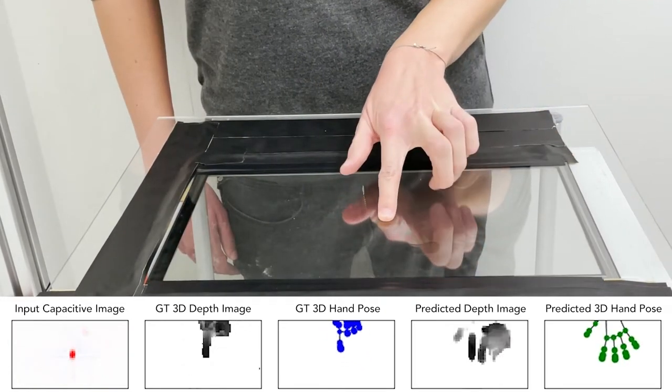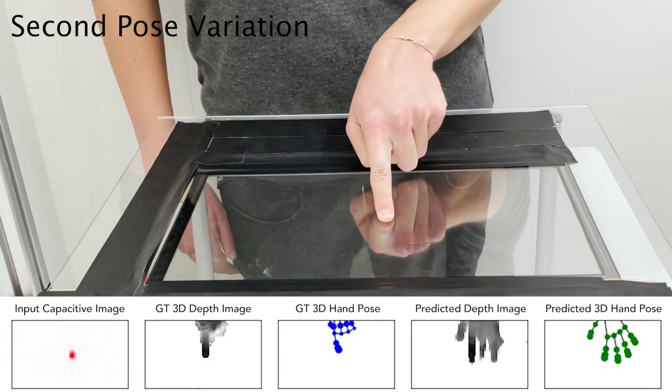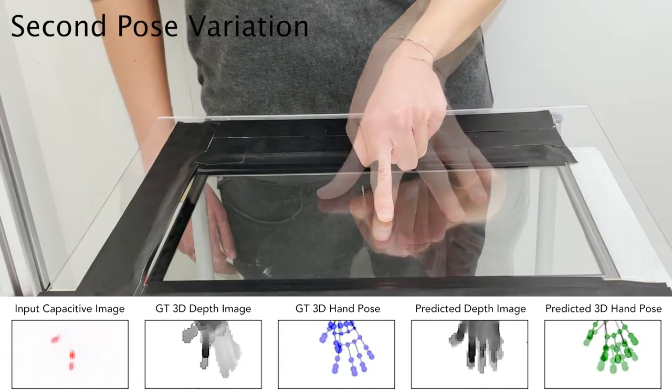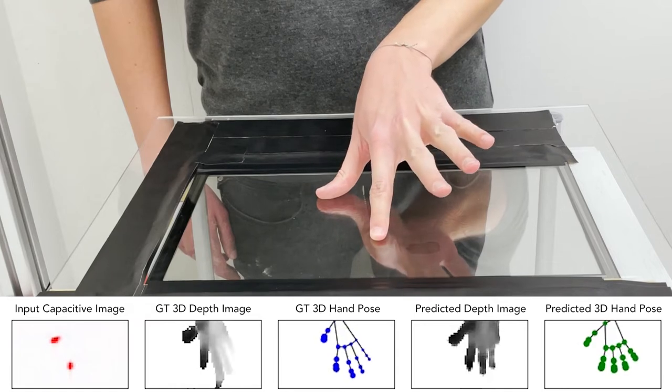As the same capacitive image can result from different hand poses due to variation in the orientation of fingers not touching the screen, TouchPose predicts the most likely hand pose for such fingers.